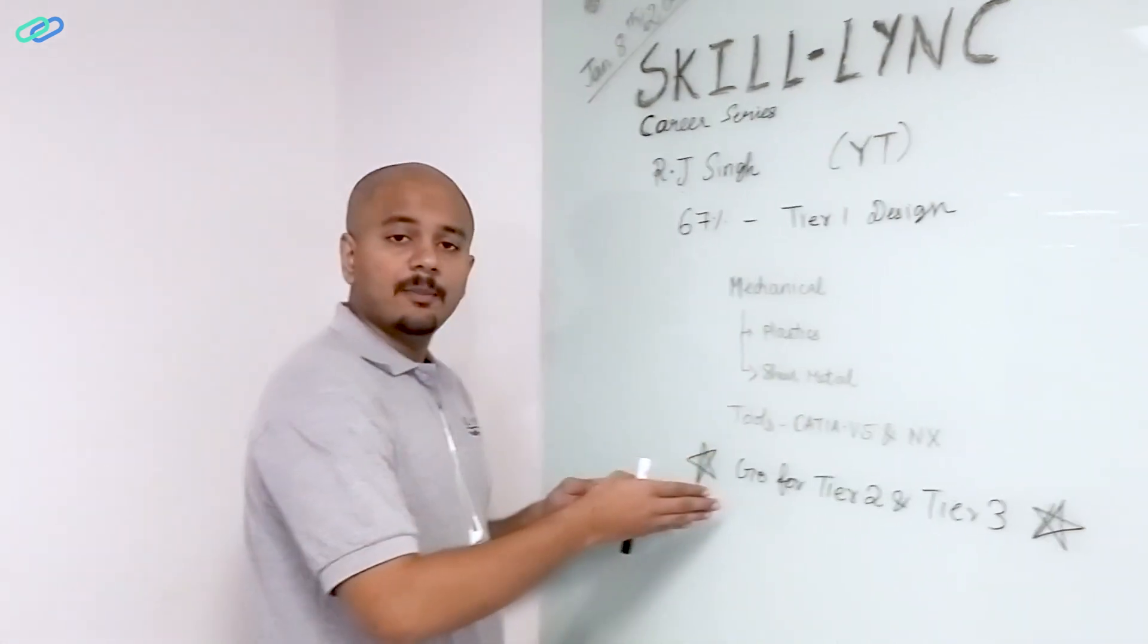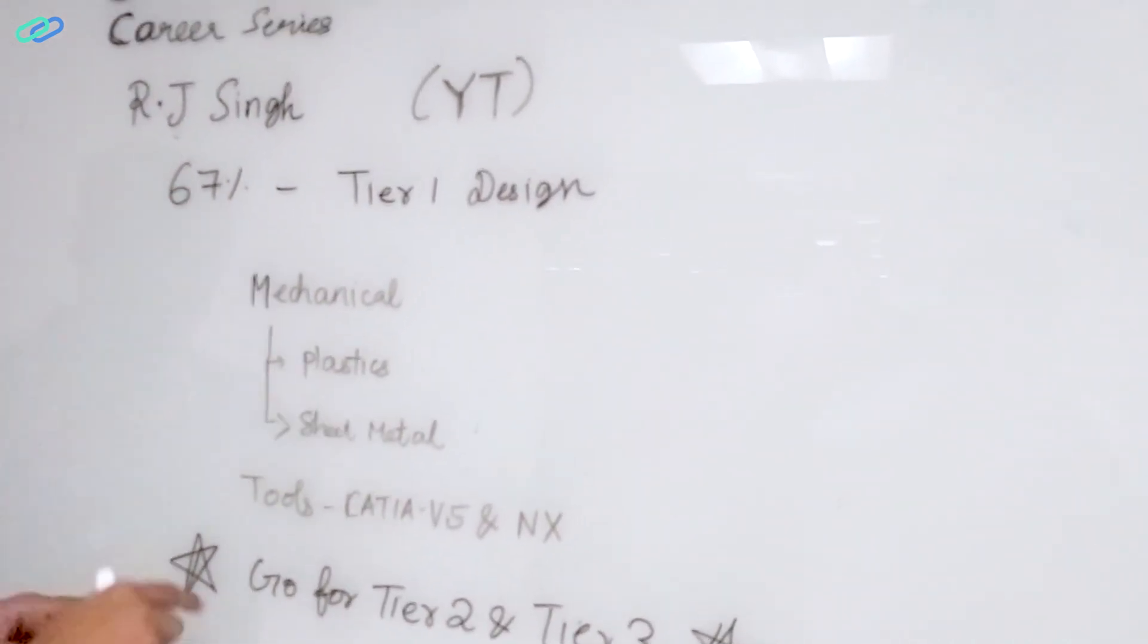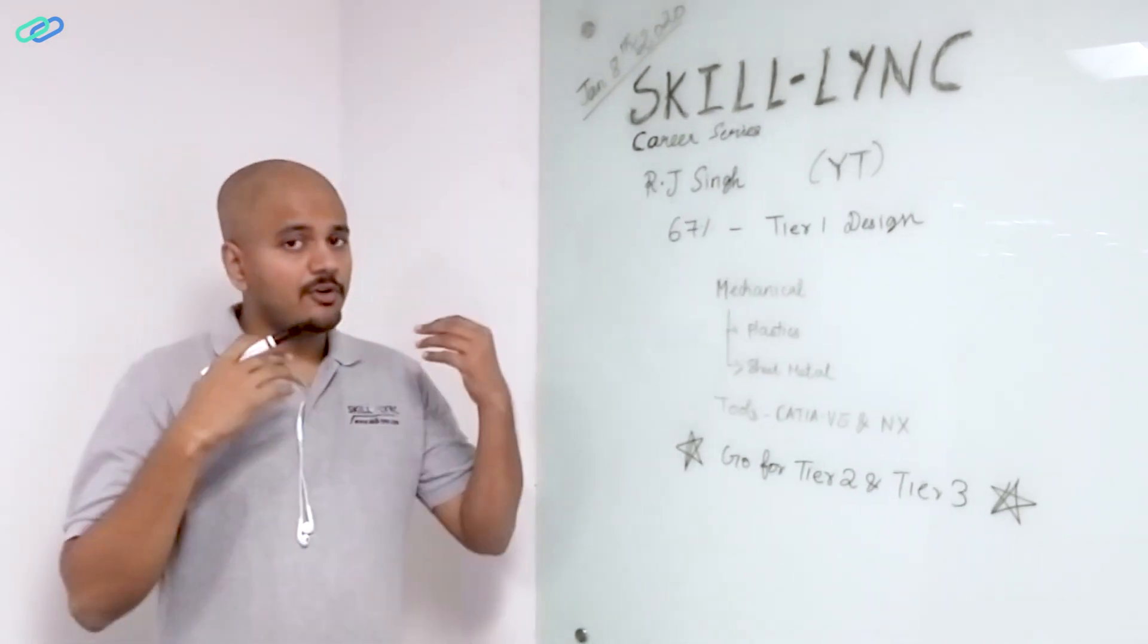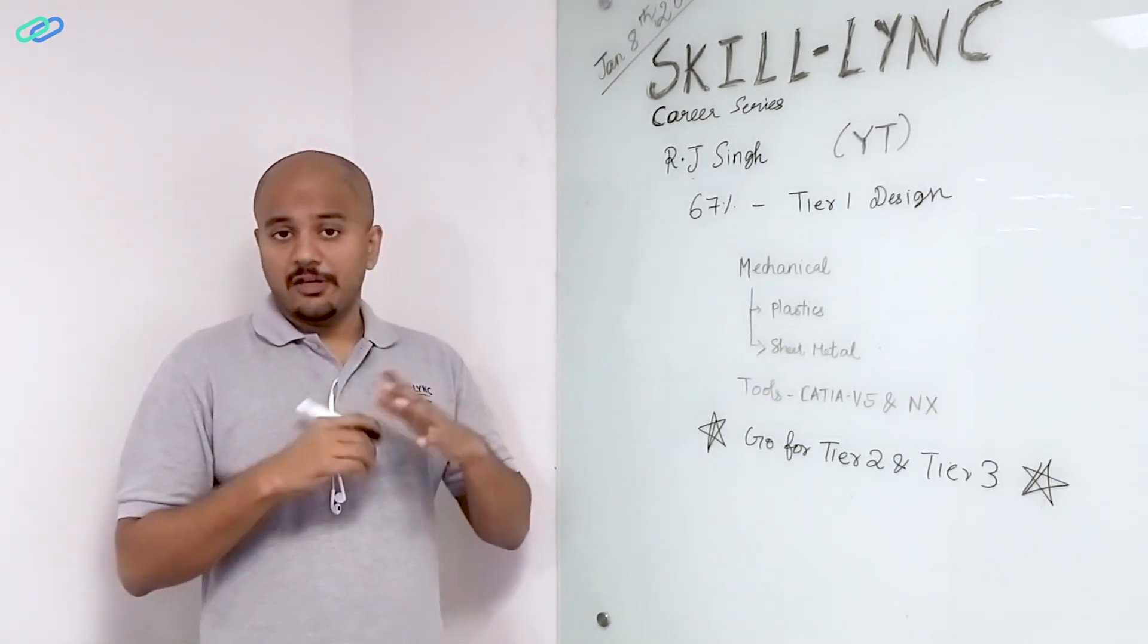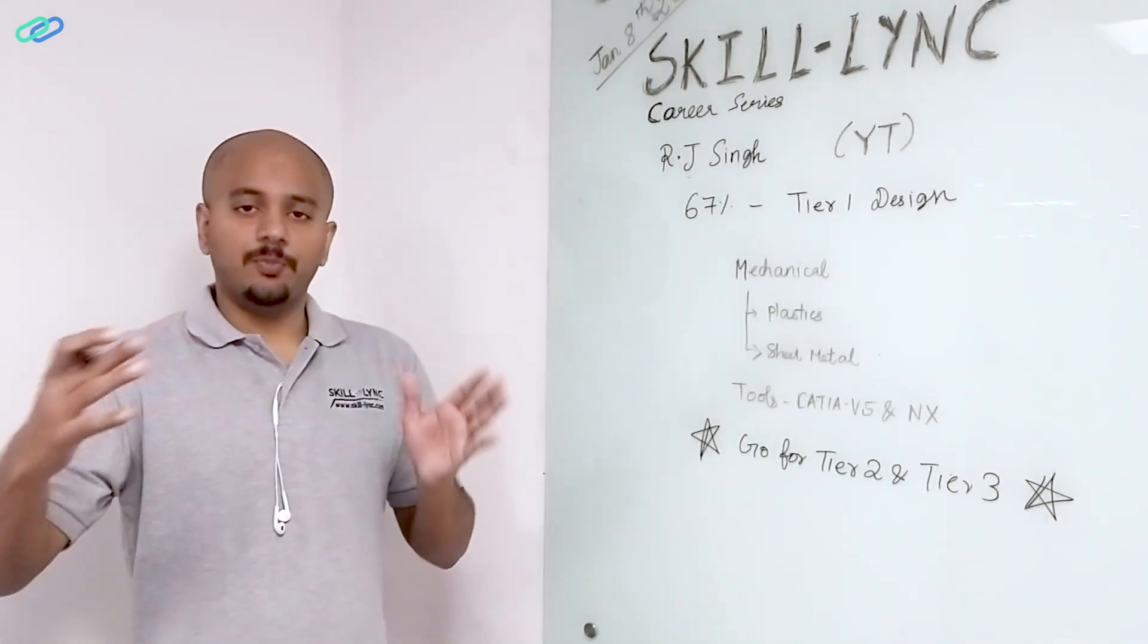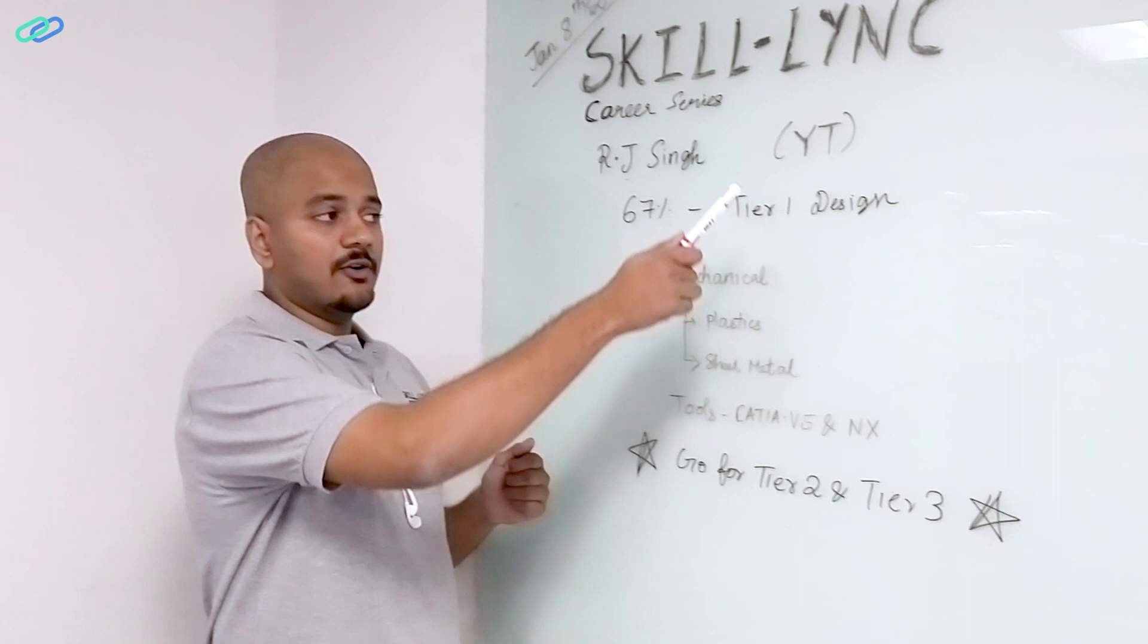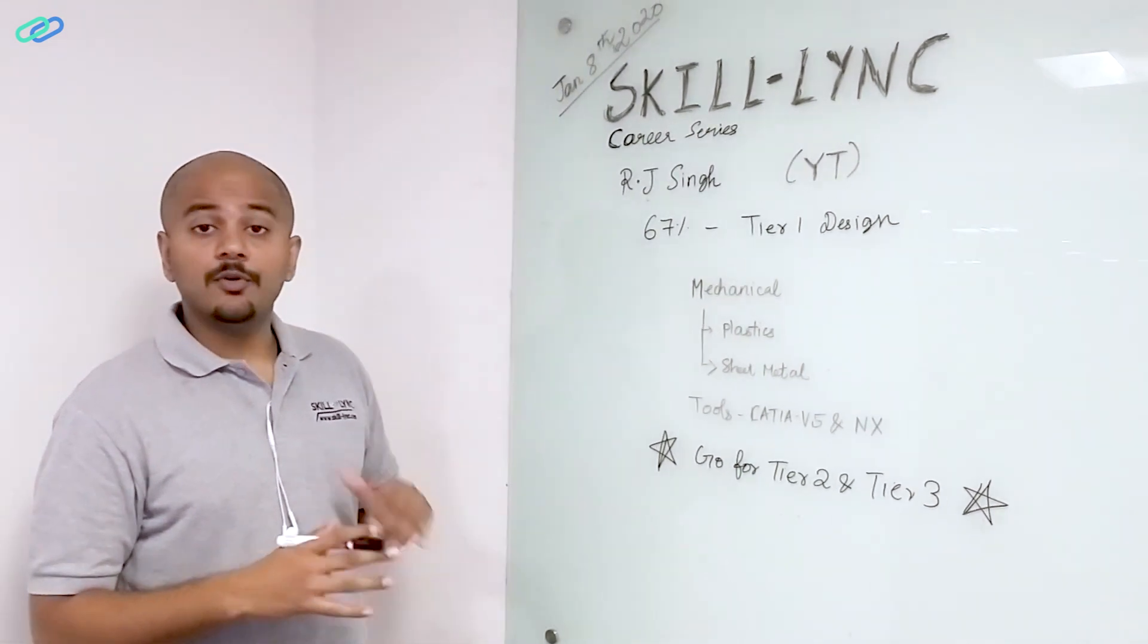So that being said, here is my advice for you, R.J. Singh. Given that your GPA or percentage is low, try for tier 2 and tier 3 companies. What's going to happen is when you go and work for these companies, you're going to be there for at least 2 to 3 years minimum. You will gain a lot of experience. Make sure that you're working on challenging projects. When you work on challenging projects, you're building experience. Now, initially, you might be paid a bit low, but that's fine. After 2 to 3 years, you get the opportunity to go back to tier 1 or even the OEM itself. So this is basically my advice for you and I hope you found it useful.